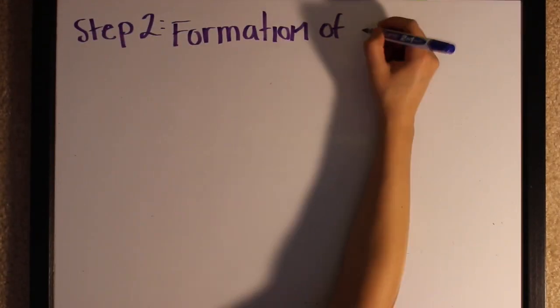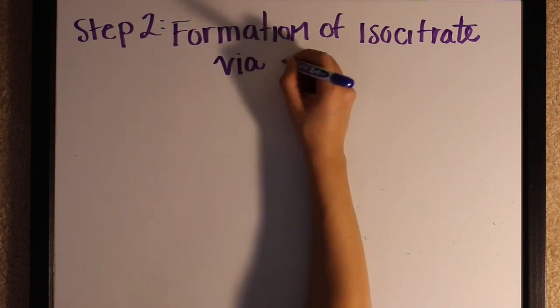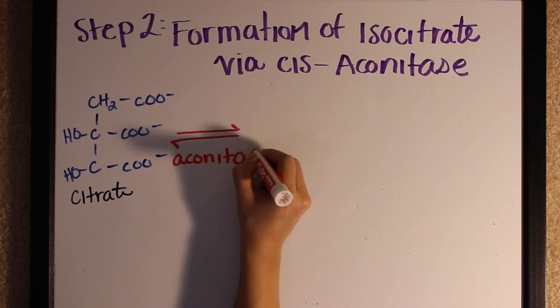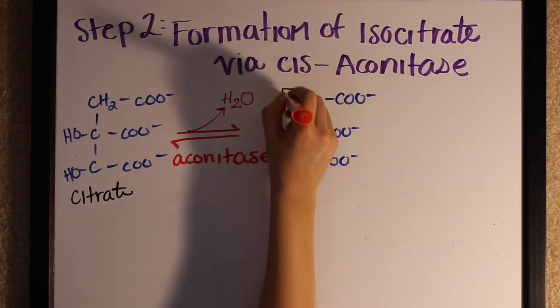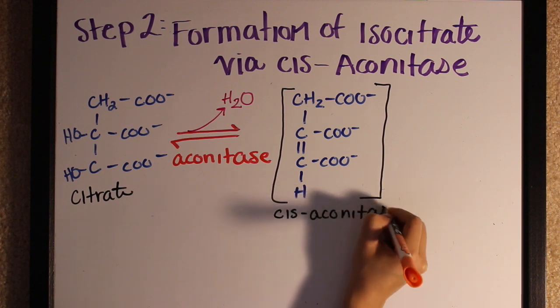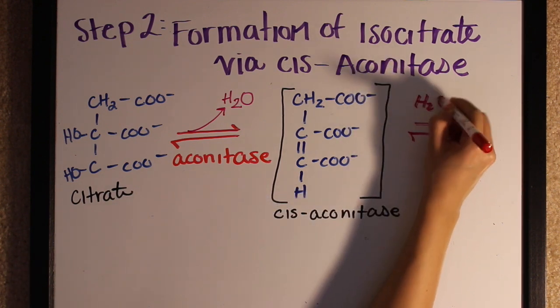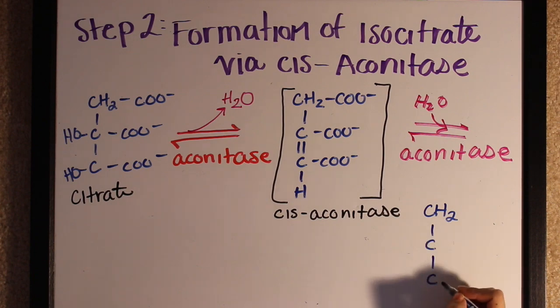Step two is the formation of isocitrate. First you have citrate from the last step, we have our enzyme, and then we make an intermediate step that isn't quite ready yet because you have to add stuff to it. It goes through with the enzyme again and then we have isocitrate.